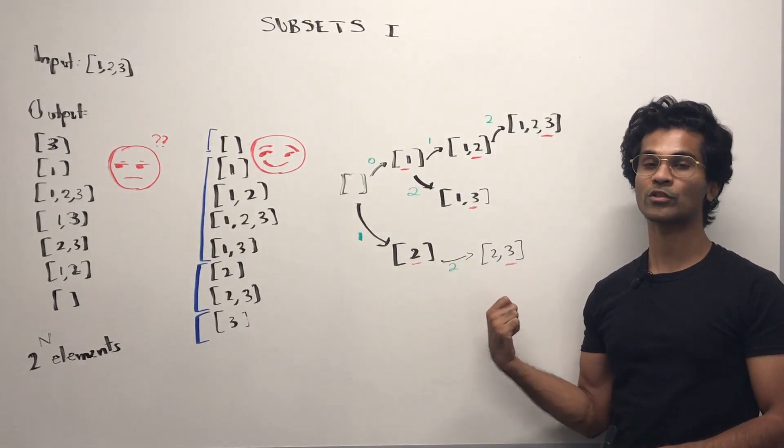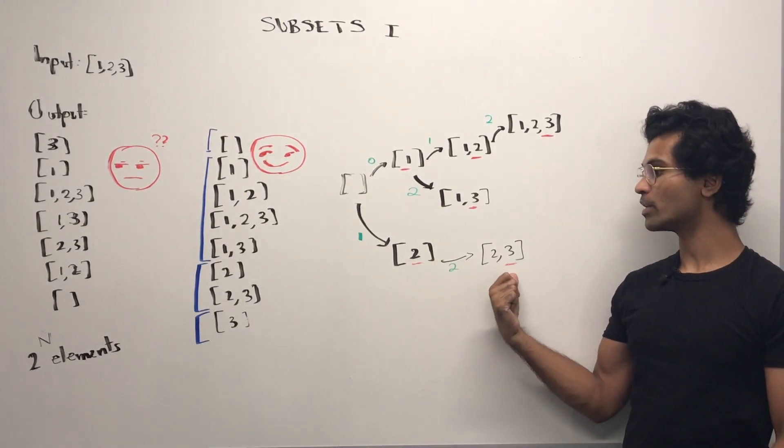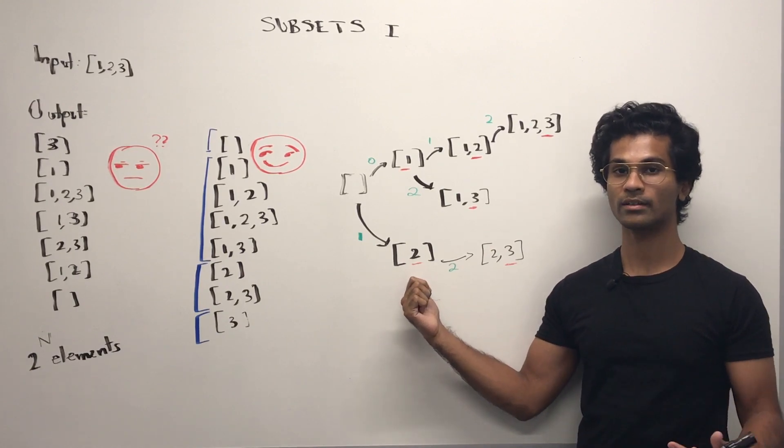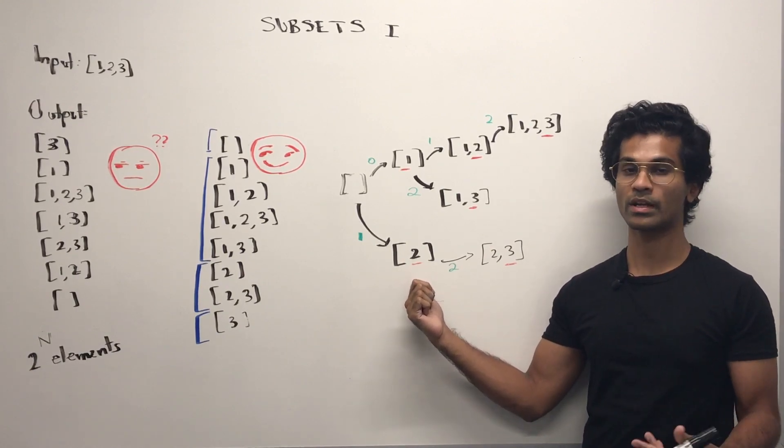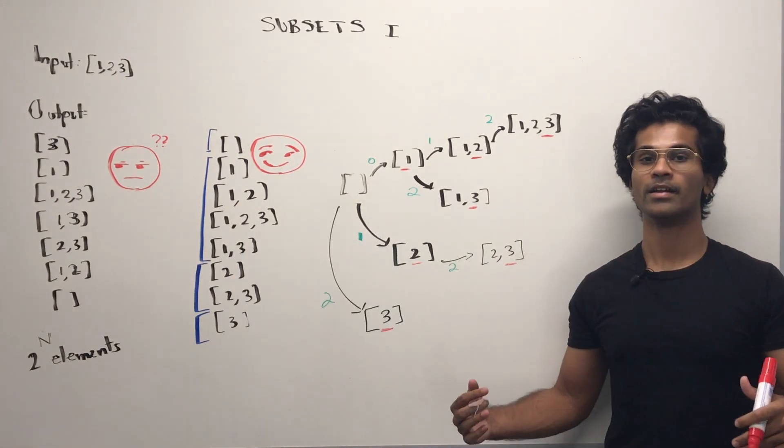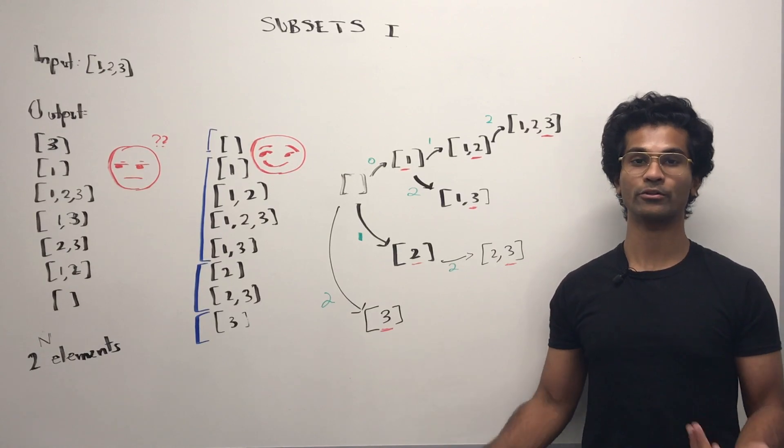Now that we're at the end again, we have to start removing. So I'll take away the three. Can I add anything to the two to make it unique? No, we're done with two and three. So we have to remove the two as well. Now we're back at the empty set. That's how we generate our final subset.